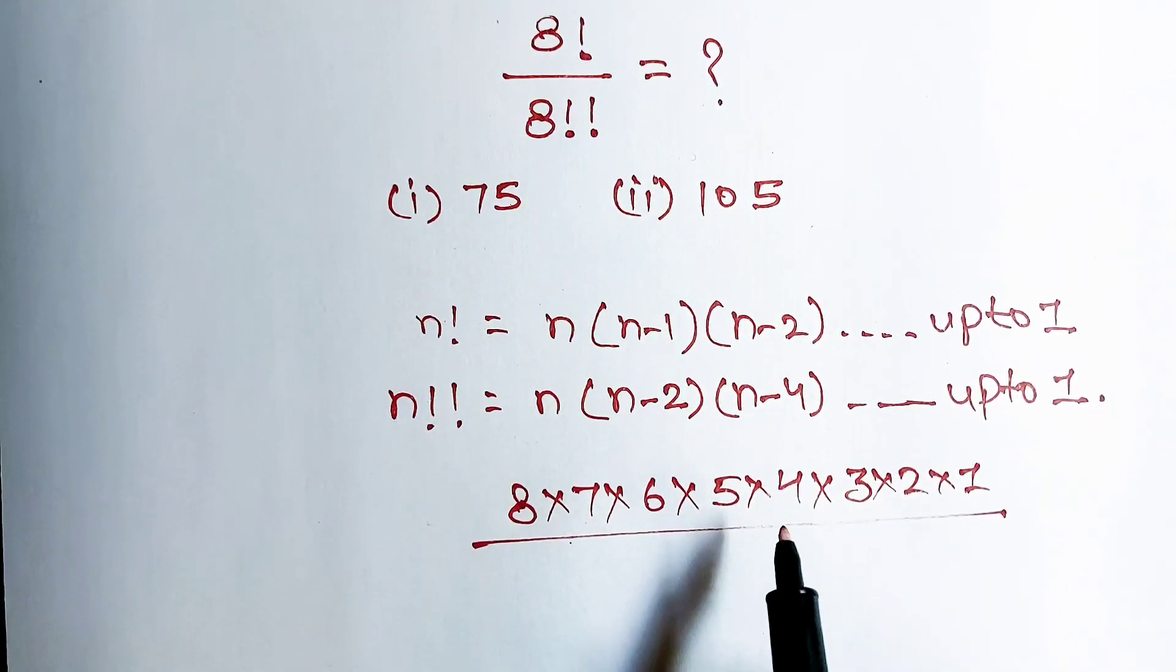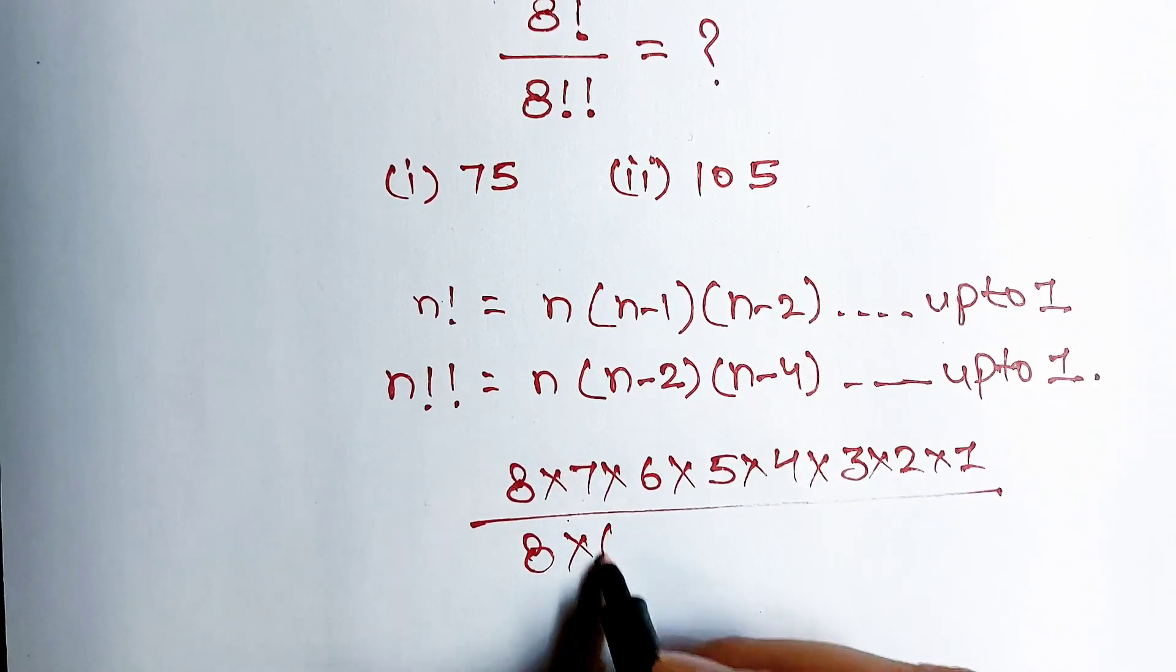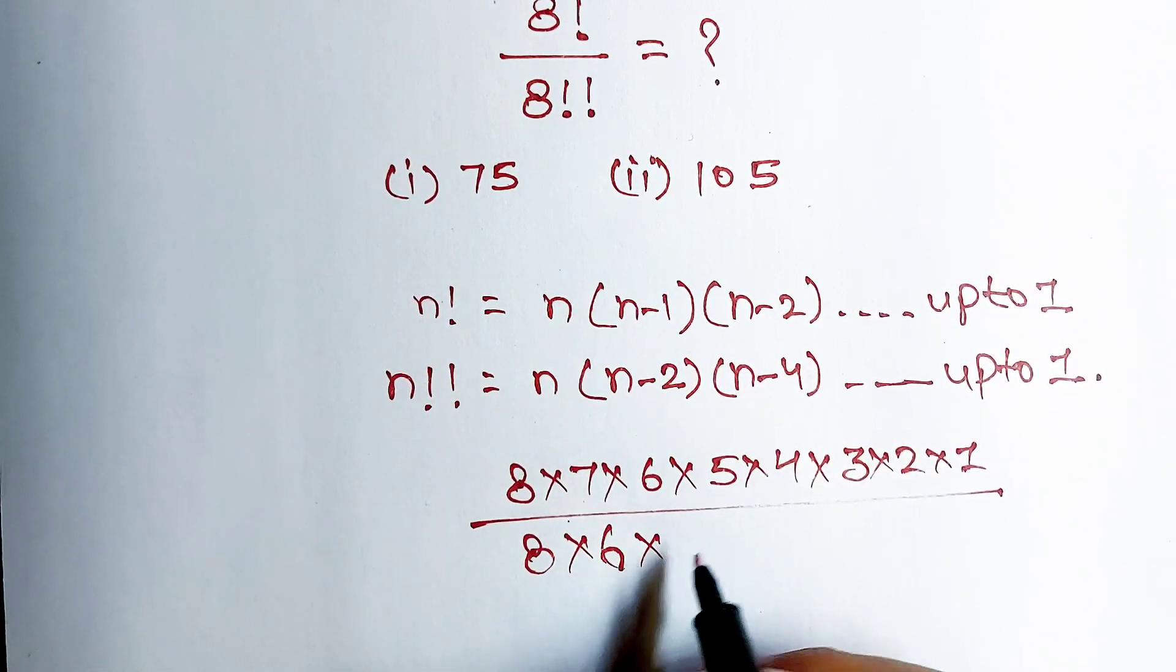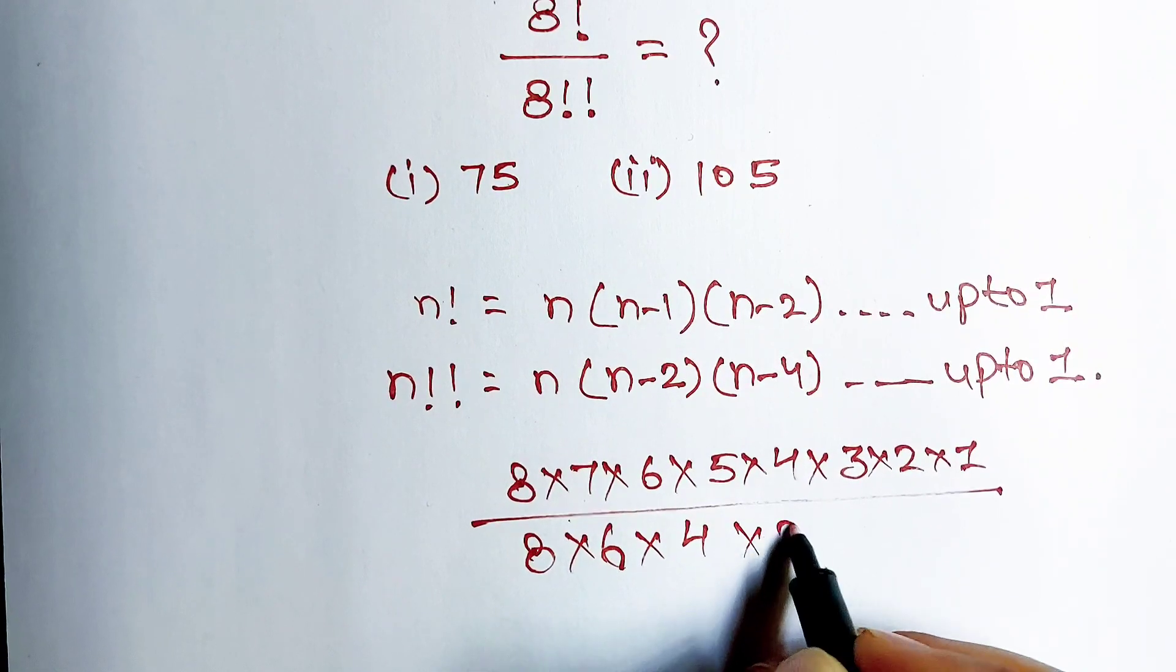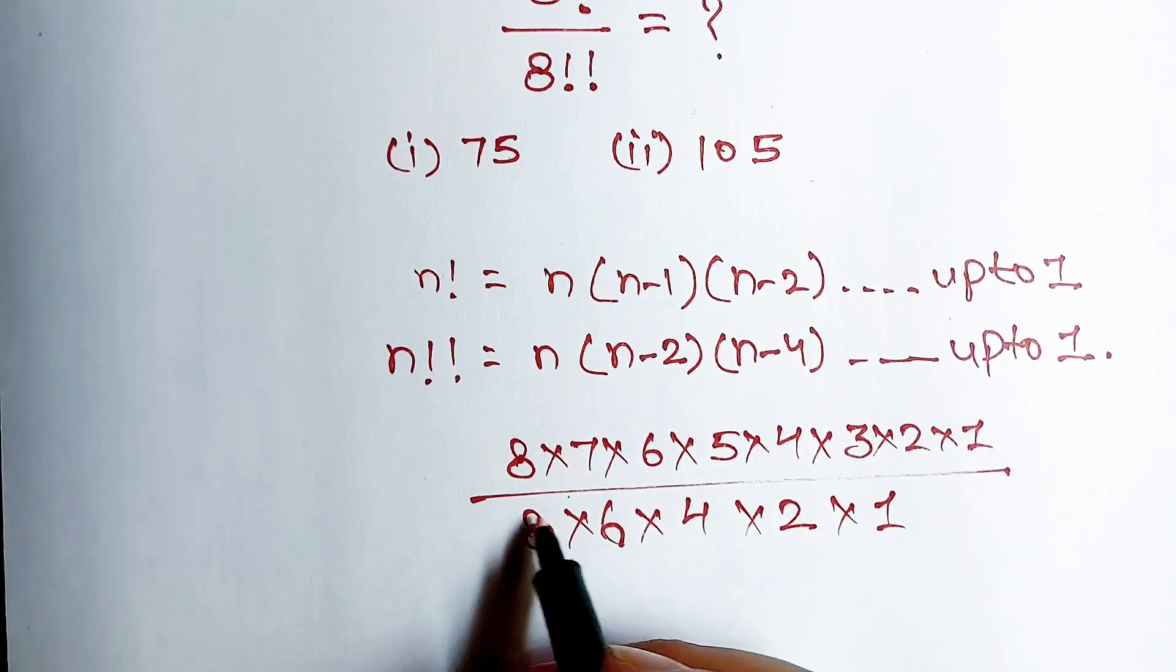And this double factorial of 8 can be written as 8 multiply 6 multiply 4 multiply 2 multiply 1.